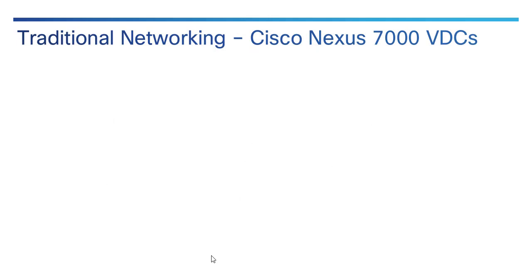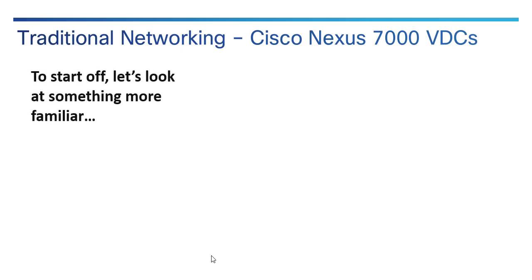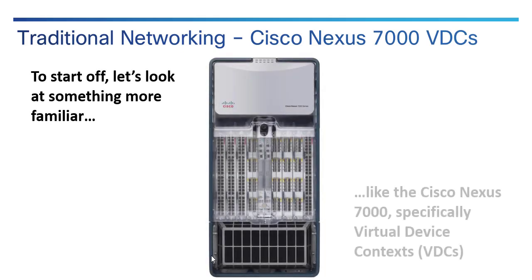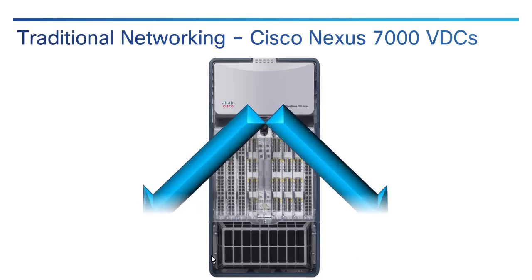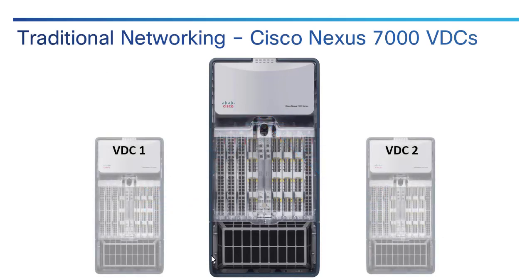I've found that when you're trying to get used to a new technology, it helps to compare it to something you're already familiar with. One of the ways that will work here is looking at Nexus 7000 VDCs and picking apart the architecture as a comparison point. Virtual device contexts have been around for a while — it's a way of logically segmenting a Cisco Nexus 7000 switch. ASA firewalls had firewall instances before the 7K ever did.